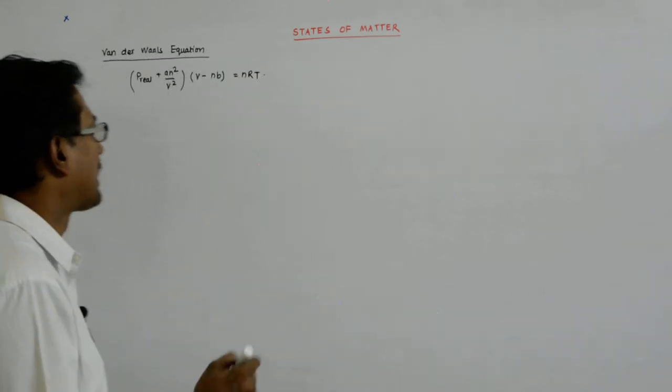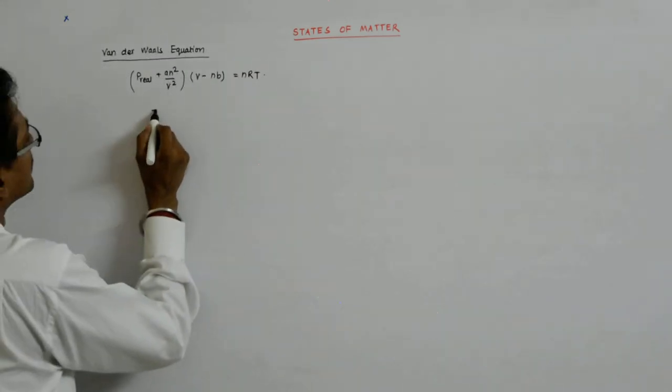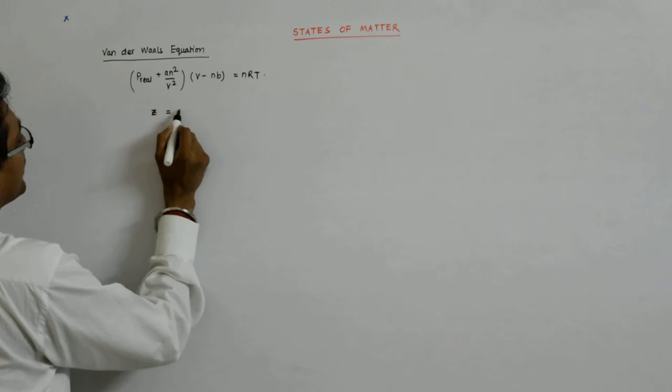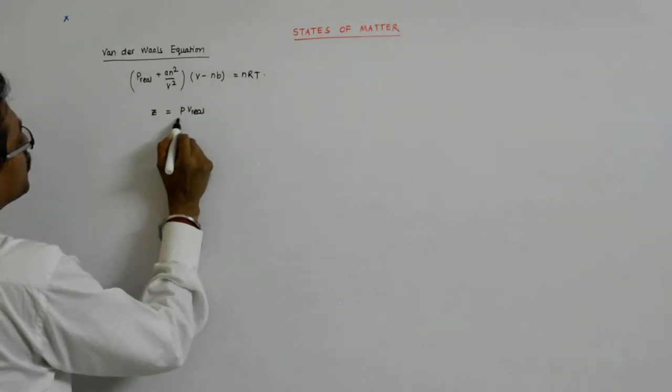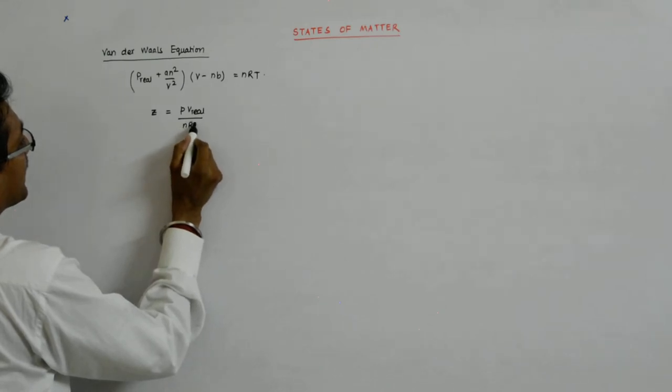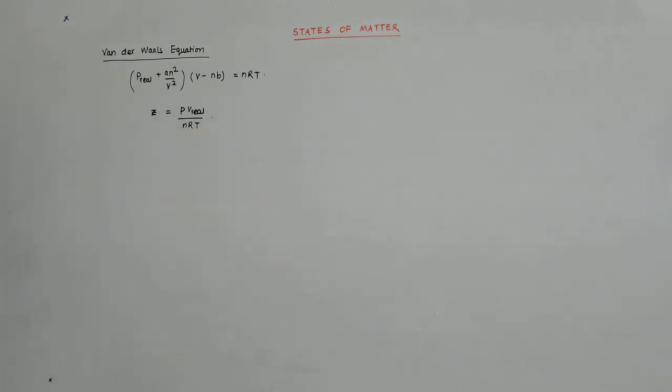Now let us try to look at Z in another way. Z is equal to P into V real upon nRT.